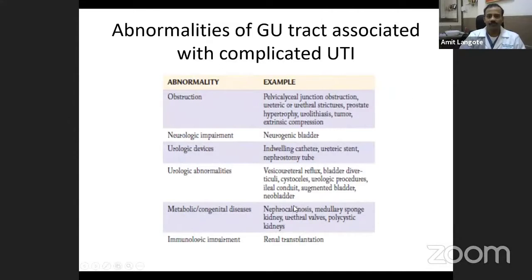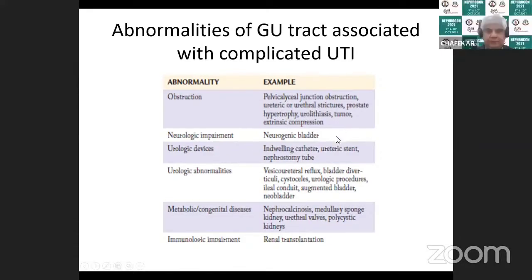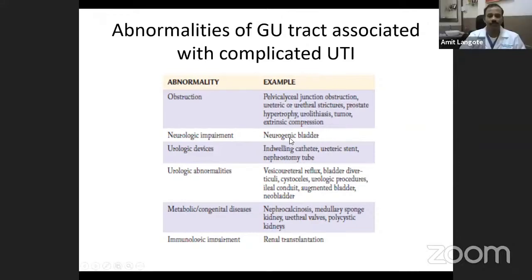The most common abnormalities associated with complicated UTI include obstruction — PUJ obstruction, ureteral or urethral strictures, prostate hypertrophy, stones, tumors, or extrinsic compression. Functional obstruction includes neurogenic bladder. Indwelling devices like stents, nephrostomy tubes, or Foley catheters are also causes. Urological abnormalities include vesicoureteral reflux, bladder diverticula, cystoceles, and urethral valves. Metabolic diseases like nephrocalcinosis can cause infections, as can immunological suppression in renal transplantation.